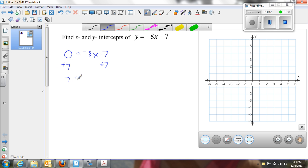I'm going to get 7 = -8x, or x = -7/8. So my y-intercept—sorry, my x-intercept is going to be (-7/8, 0). I need to write it as a point. That's where my intercept is.